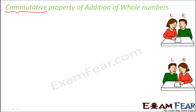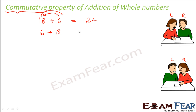So do you get some clue from this? What it actually tells is, let us say if you add any two whole numbers, for example 18 and 6. The result is 24. Now if you exchange the position of these two whole numbers — that is, instead of writing it as 18 plus 6, if you write it as 6 plus 18 — the result would still remain the same, which is 24. So this shows that 18 plus 6 is equal to 6 plus 18. When you add two whole numbers, even if you interchange their positions, the result still remains the same.